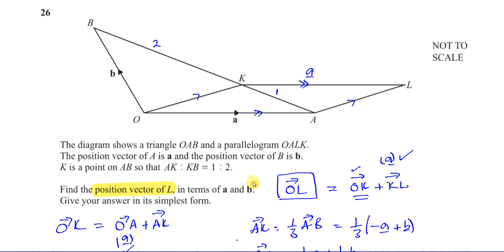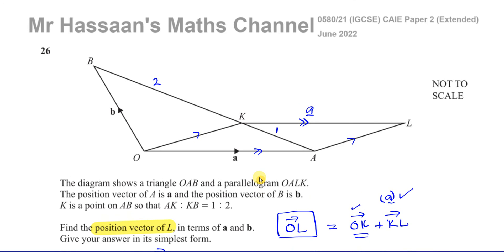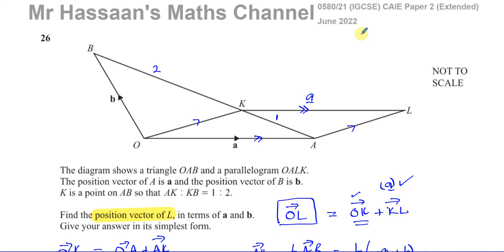That's the answer to question 26 from the June 2022 IGCSE Cambridge paper, 0580 and 0980 syllabus, paper 2, variant 1. Other questions from this paper and from the vectors topic can be found in the playlists linked on screen. You can subscribe to the channel for revision help. Thank you for watching and see you soon.